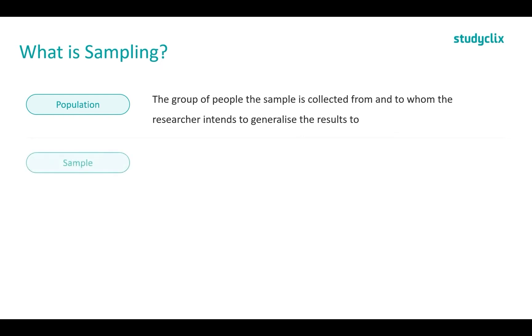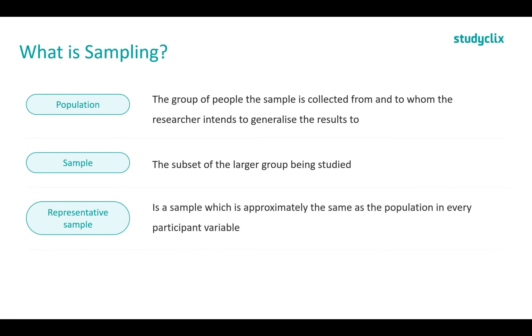The sample is the subset of the larger group being studied, so it is a subset of the population. Now a representative sample means the sample is approximately the same as the population in every participant variable. So this would be representative of age, representative of gender, all those kinds of things. It has to be the same proportion as it is in the population.